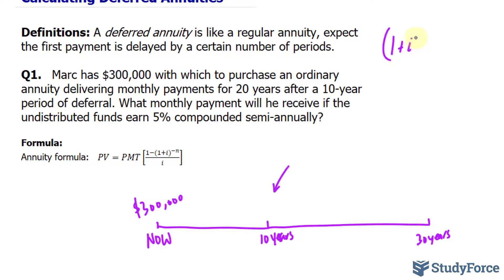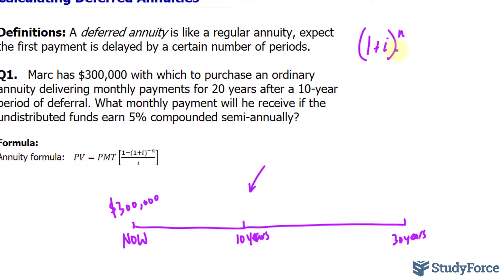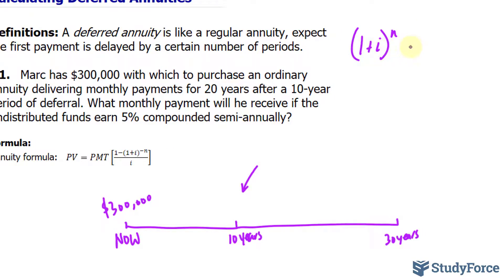I have 1 plus i raised to the power of n, where n represents the number of periods and i represents interest. And that is equal to 1 plus i prime raised to the power of n, which is in reference to the interest that we're looking for, which is monthly. We want to convert 5% compounded semi-annually into monthly.